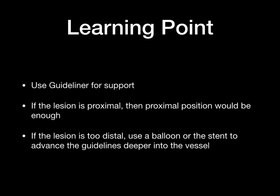The learning point in this procedure is related to the guide liner. In those situations where rotablation is not available or cannot be used because of a myocardial infarction, as in this patient, the guide liner is your best friend. If the lesion is proximal, then a proximal position of the guide liner will probably be enough. But if the lesion is too distal, then you can use a balloon or a stent as an anchor to advance the guide liner deeper into the vessel into a more advanced position, and from that advanced position, you can deliver your stent as distal as you want in the vessel.